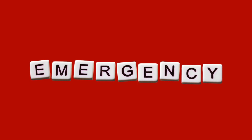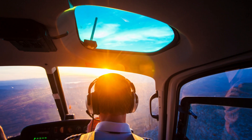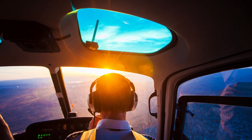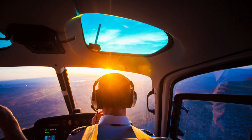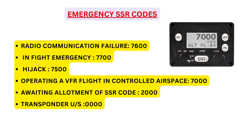What are emergency SSR codes? Normally pilots have to select and set the IFF code or SSR code as allotted by ATC, but in case of an emergency situation, exclusive codes are to be set. In case of radio communication failure, squawk code 7600. In case of in-flight emergency, squawk code 7700. In case of hijack or unlawful interference, squawk code 7500.